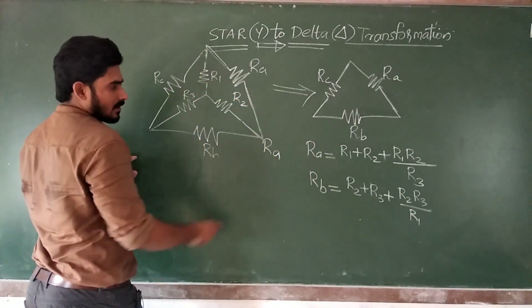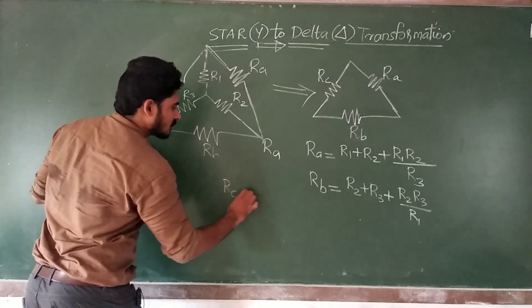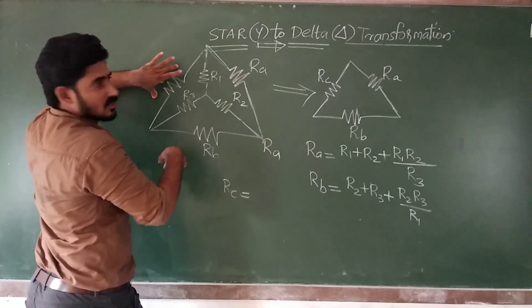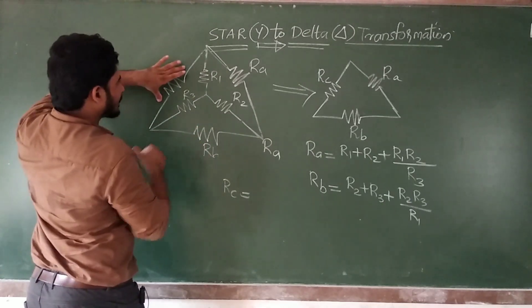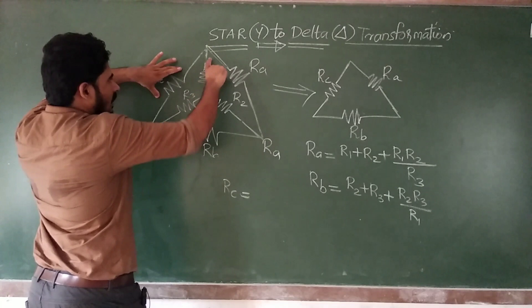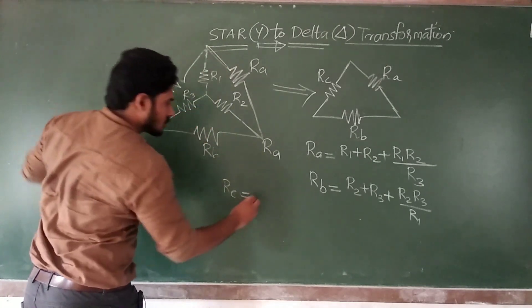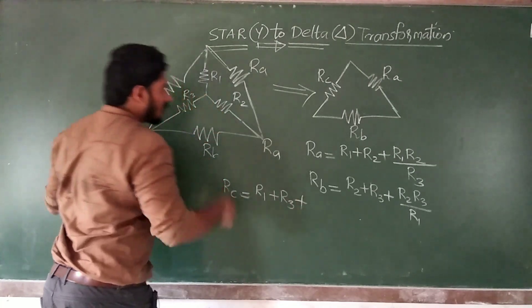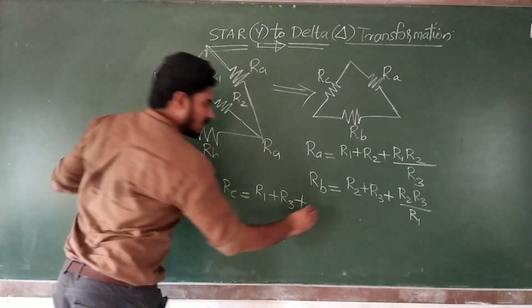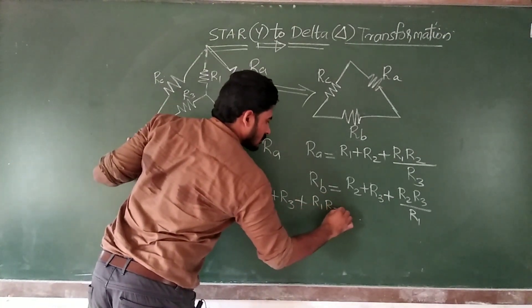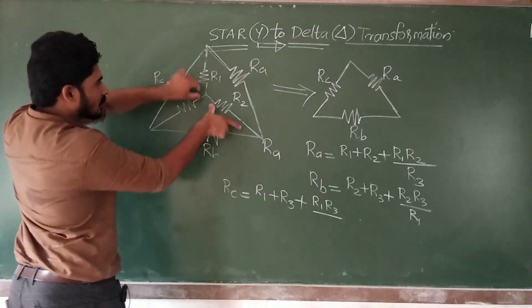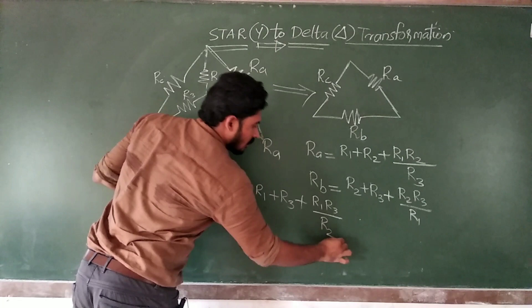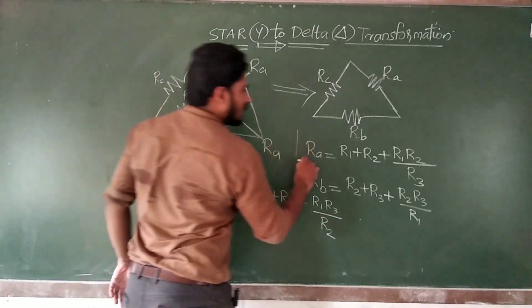Now the third one — Rc. How can you find out the value of Rc, the third resistor in the delta connection? For that, you take the resistors which are connected to Rc — R1 and R3. You add them: R1 plus R3, plus you multiply R1 into R3, divided by the third resistor which is R2.